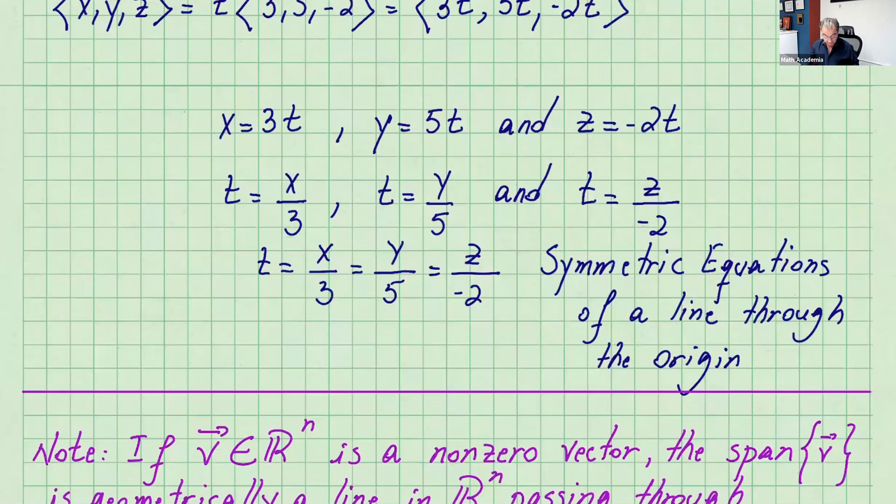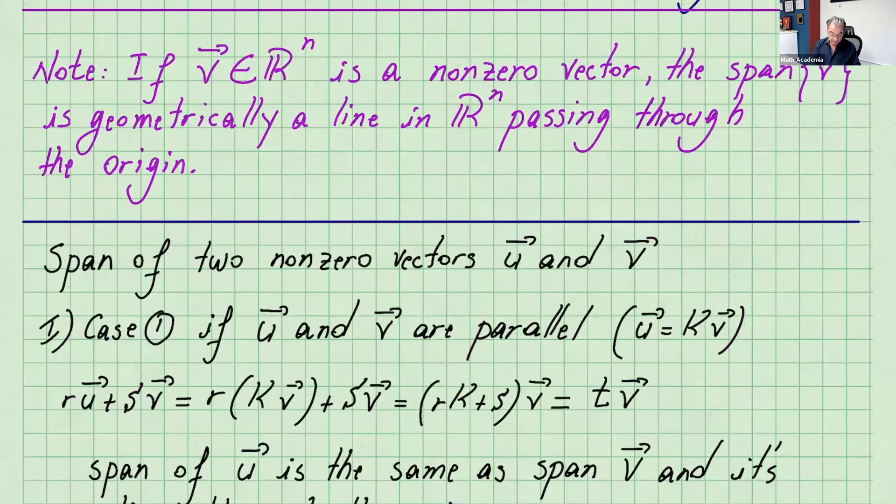So what is the conclusion? If v is a non-zero vector in Rn, the span of v is geometrically a line in Rn passing through the origin.